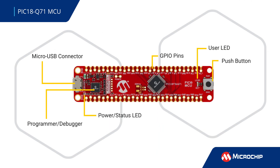Our extensive ecosystem of tools makes it easy to get started with your design. The PIC-18 Q71 Curiosity Nano Development Board features an integrated programmer debugger and convenient access to all the device's pins and features. This can be used with the Curiosity Nano Baseboard with three microbus sockets for easy hardware expansion using click boards.